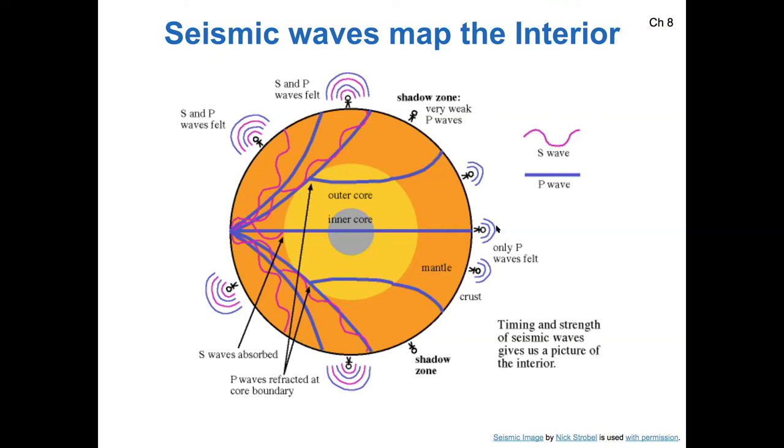So notice that my observers way over here on the right side of the Earth are not measuring any S waves. They're only measuring P waves. But for some of our observers closer to the epicenter of our earthquake, they're receiving both kinds of waves.